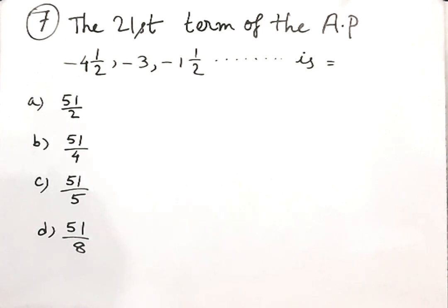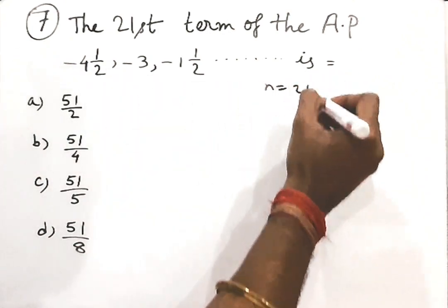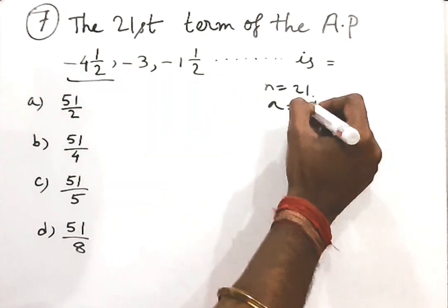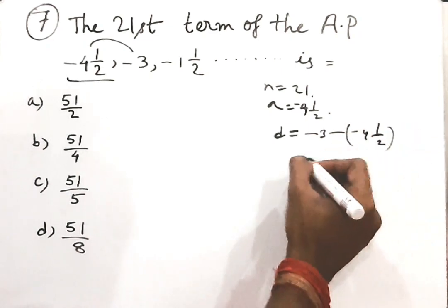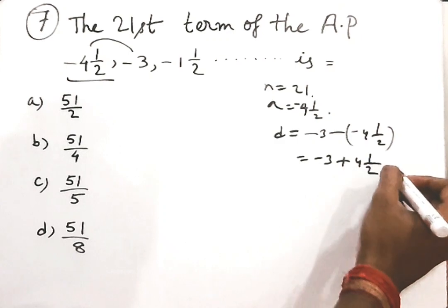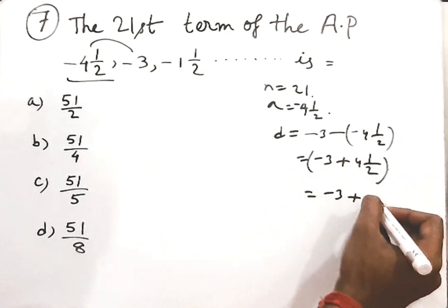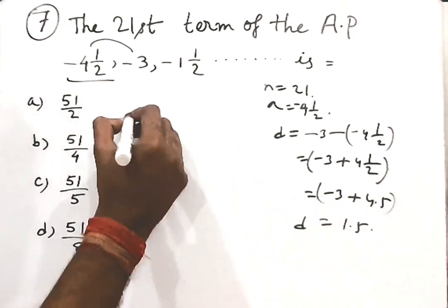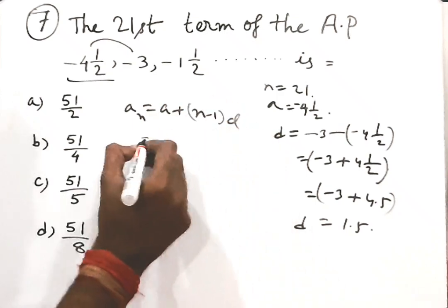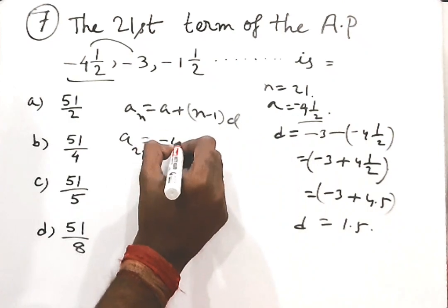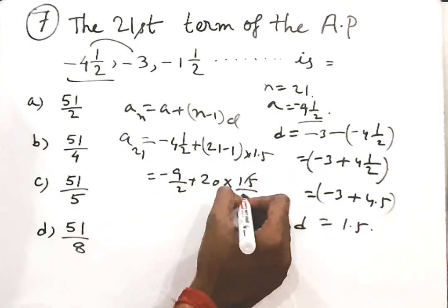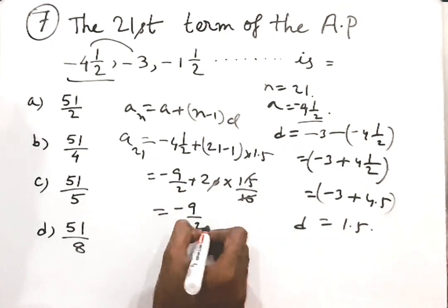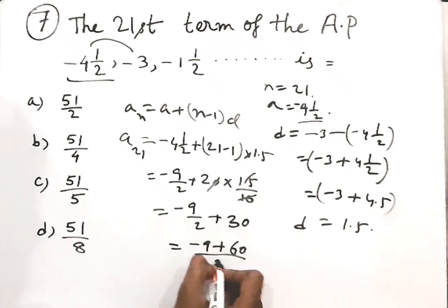Next question: find the 21st term of the AP: minus 4.5, minus 3, minus 1.5. Here n equals 21, first term A equals minus 4.5, and common difference D equals minus 3 minus (minus 4.5) equals 1.5. Using AN equals A plus (n minus 1)D, we get A21 equals minus 9/2 plus 20 times 1.5 equals minus 9/2 plus 30 equals (minus 9 plus 60)/2 equals 51/2. So the answer is 51/2.